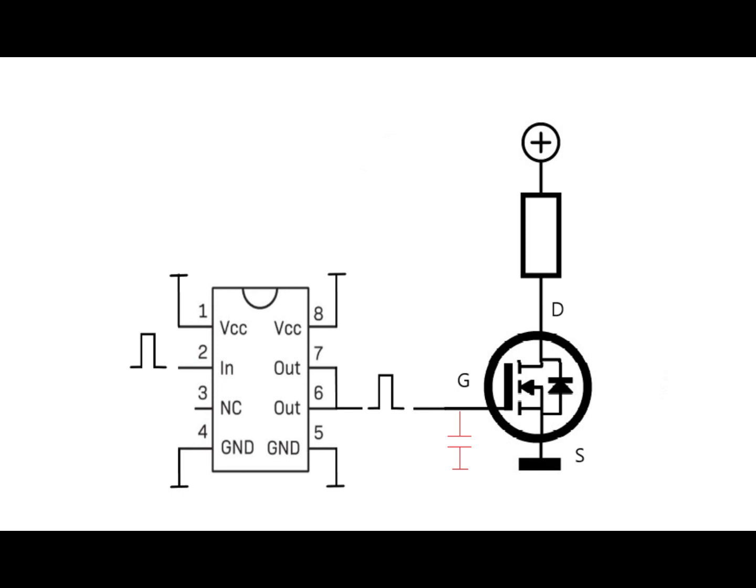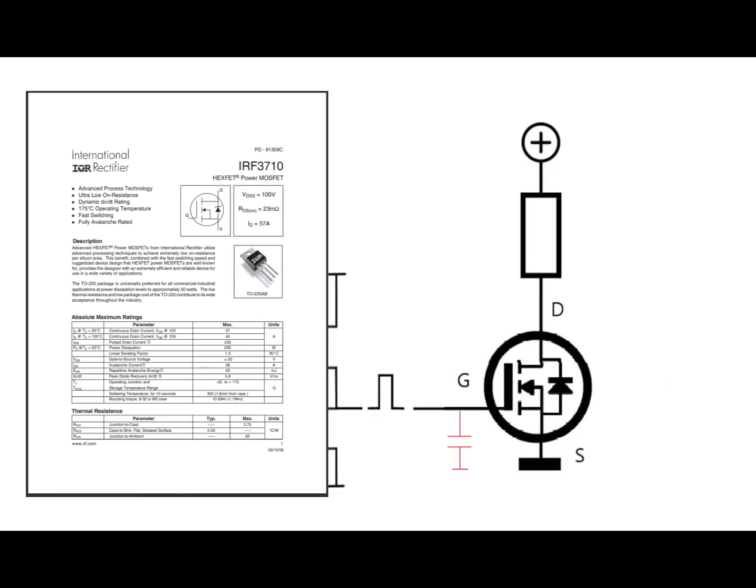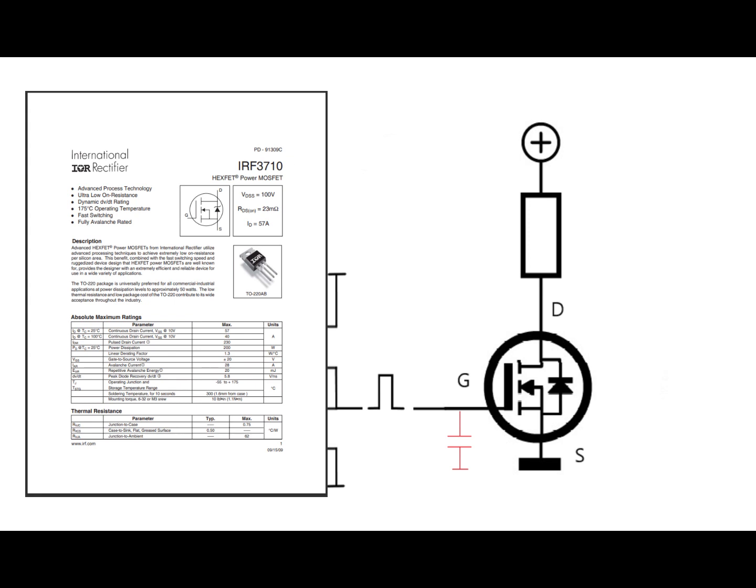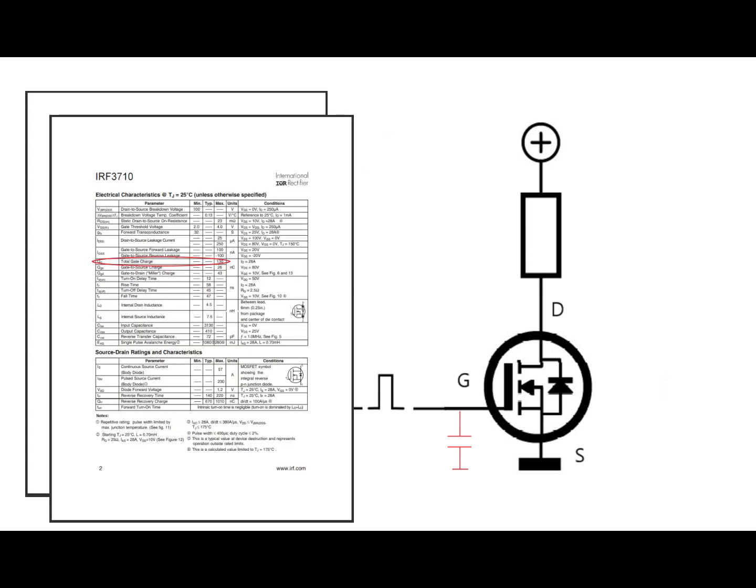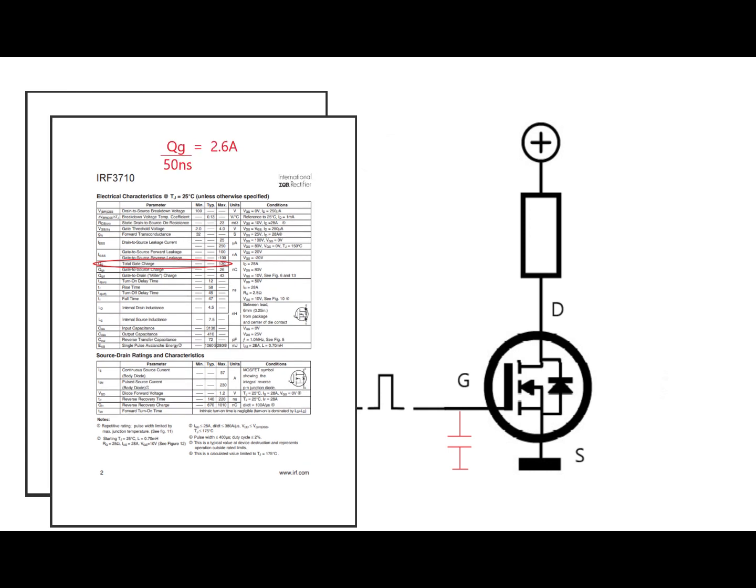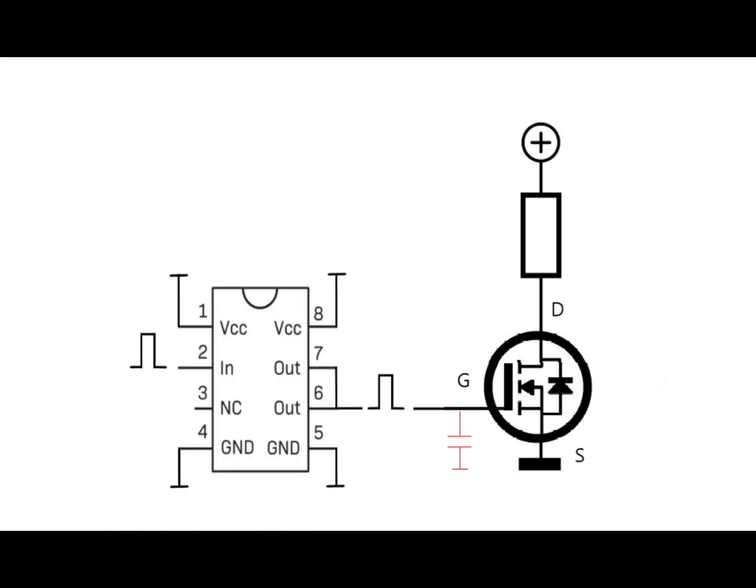We can estimate this by going to the MOSFET data sheet and finding a value called the total gate charge QG, which for the MOSFET IRF3710 for example is 130 nanocoulombs. Then we divide this value by how long we want our switching transition to be, so 50 nanoseconds for example, and that will give us a current which we need, which in this case is 2.6 amps. But this is only an estimation and in reality we may need something more powerful so that we can have a margin of error to work with.